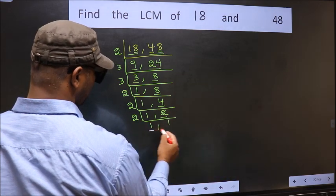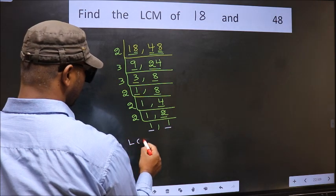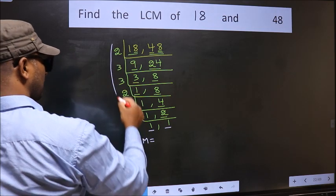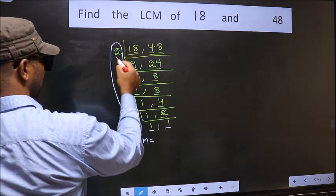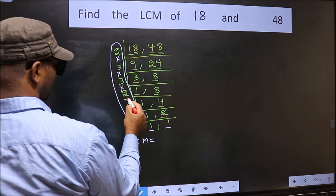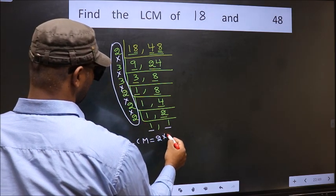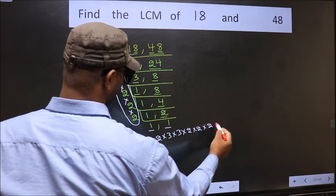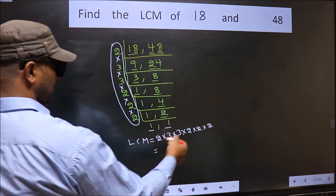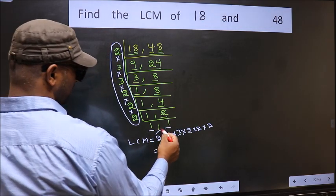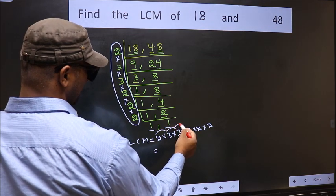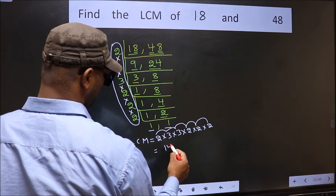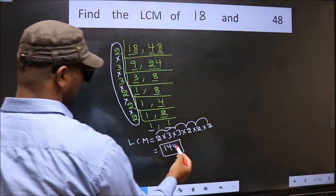So we got 1 in both the places. Our LCM is the product of these numbers — that is 2 into 3 into 3 into 2 into 2 into 2 into 2 into 2. Let us multiply these numbers: 2 into 3 is 6, into 3 is 18, into 2 is 36, into 2 is 72, into 2 is 144. So 144 is our LCM.